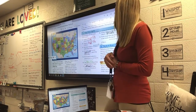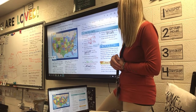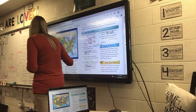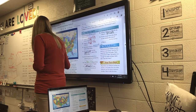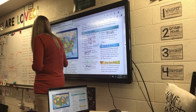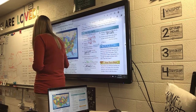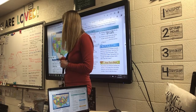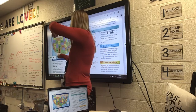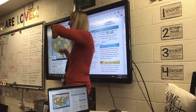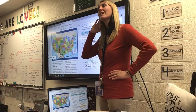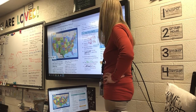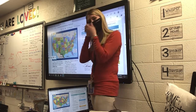Number nine: The Rio Grande forms the full border between the state of blank and the country of Mexico. I'm going to find the Rio Grande River. The Rio Grande is a river that divides Mexico from what state in our country? Texas! The Rio Grande forms the border between Texas and Mexico.